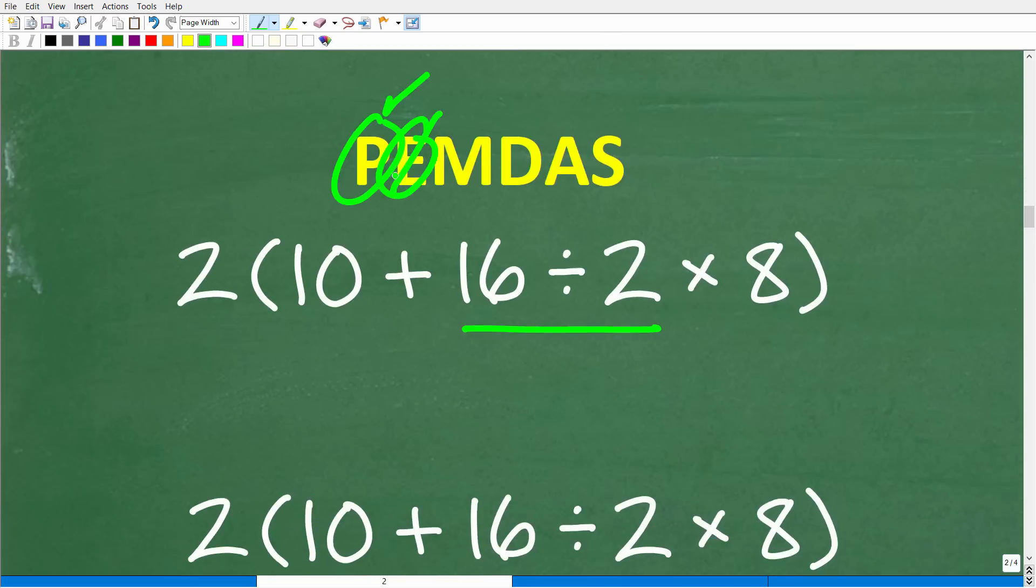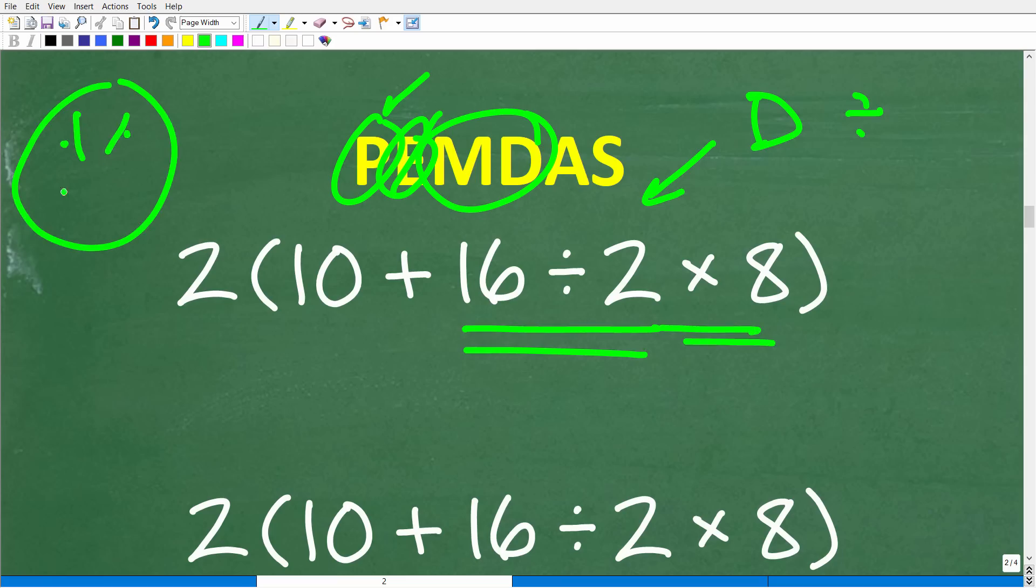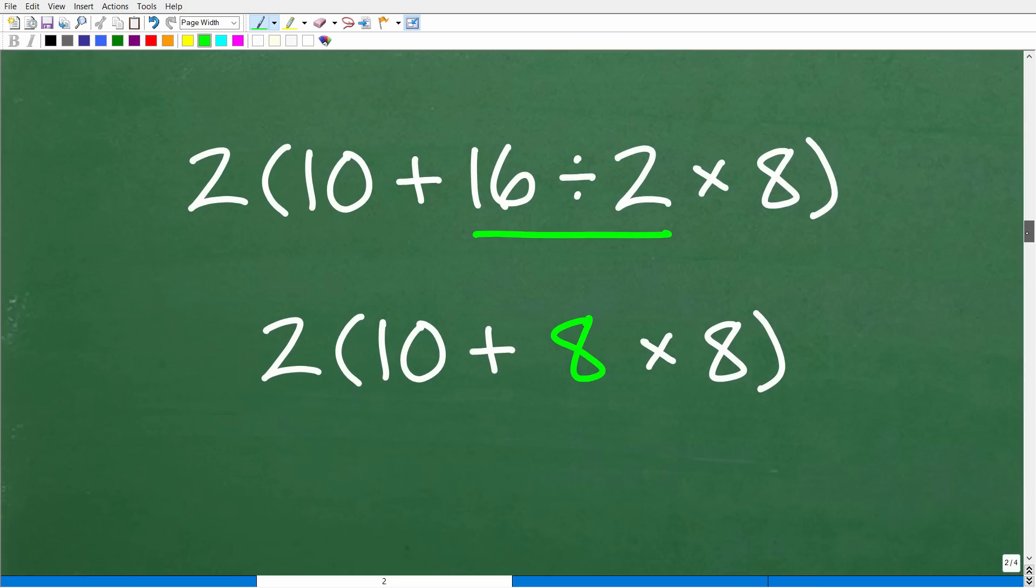Here is our PEMDAS situation. We're working inside the parentheses. There is no powers. Do we have multiplication, division? Yes. Now, what do we see first from left to right? We see the division. So we see the division first, so that's what we have to do. Now, I can tell you right now, a lot of people made this error in this problem. They did multiplication because they thought they were PEMDAS order of operations experts. Well, you've got to be really careful with this. So 16 divided by 2. This is where we have to start. We have division here, multiplication here. We've got to do this first because that's what we see from left to right.